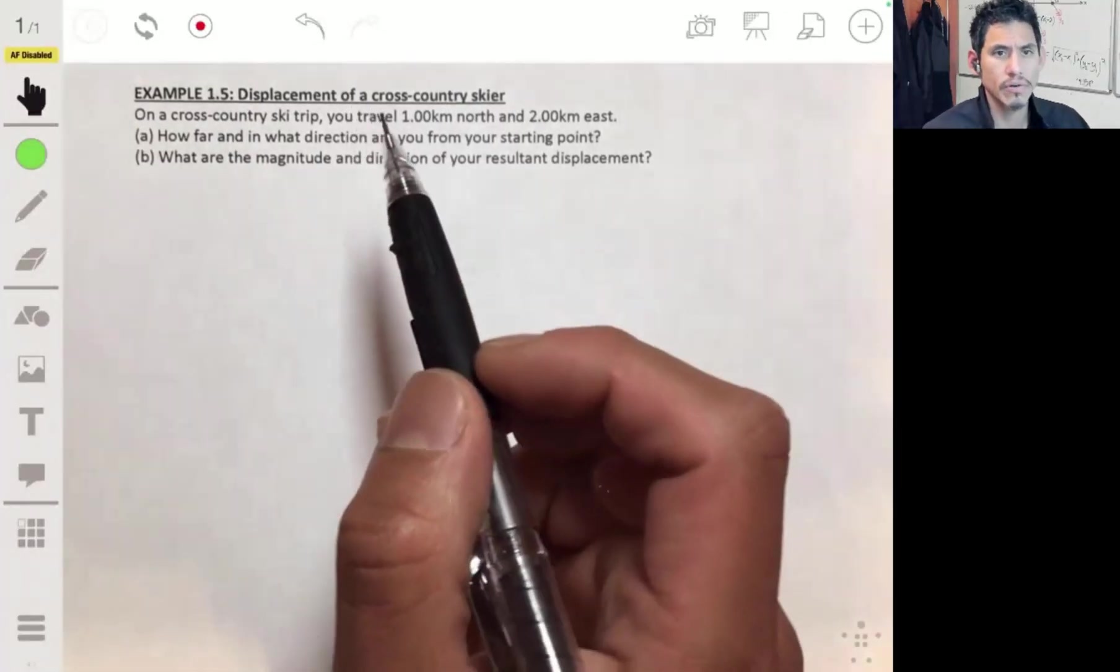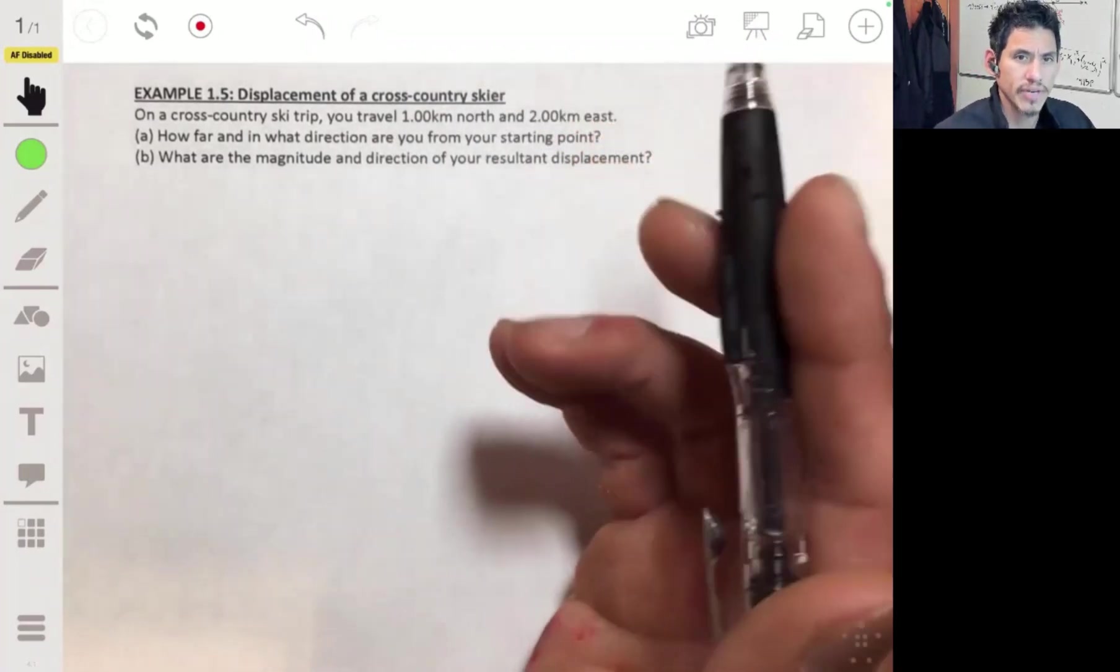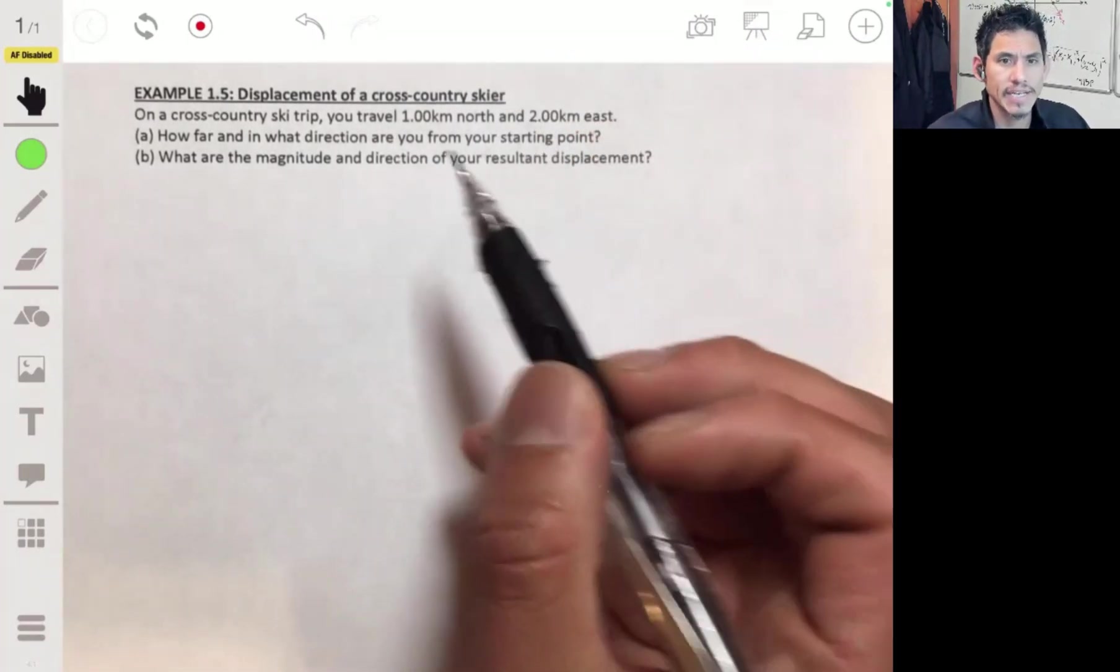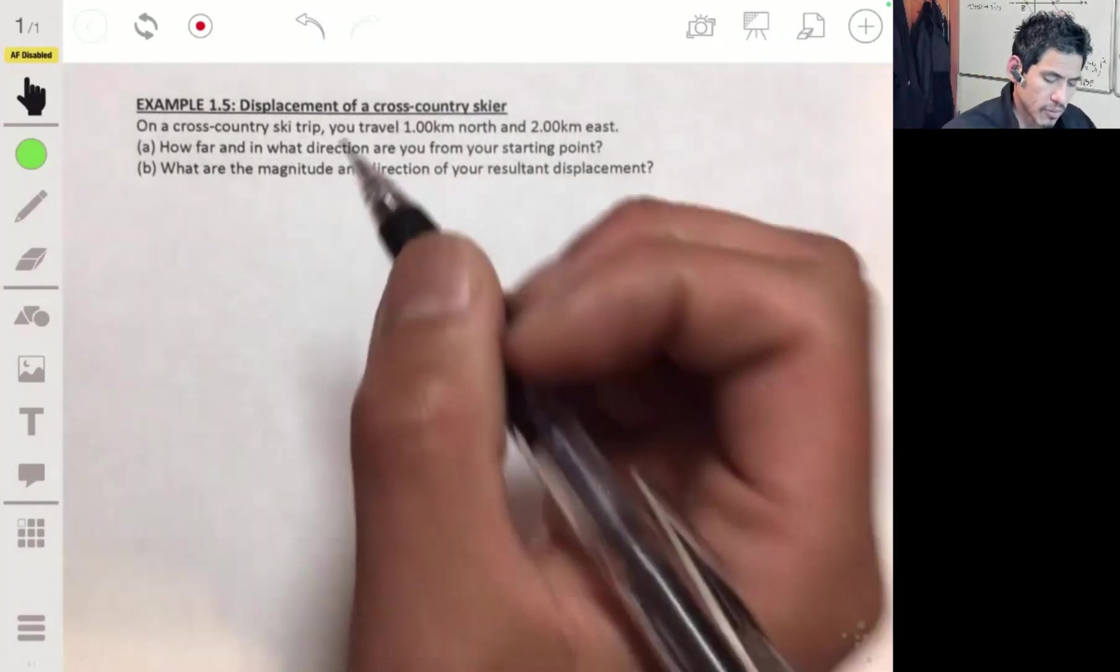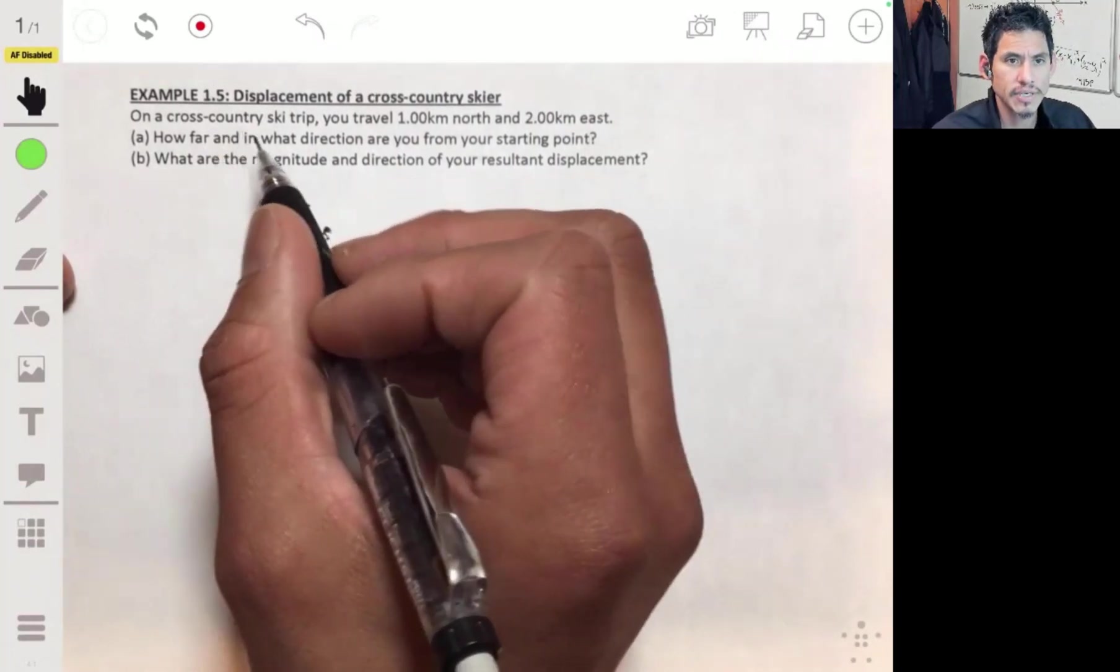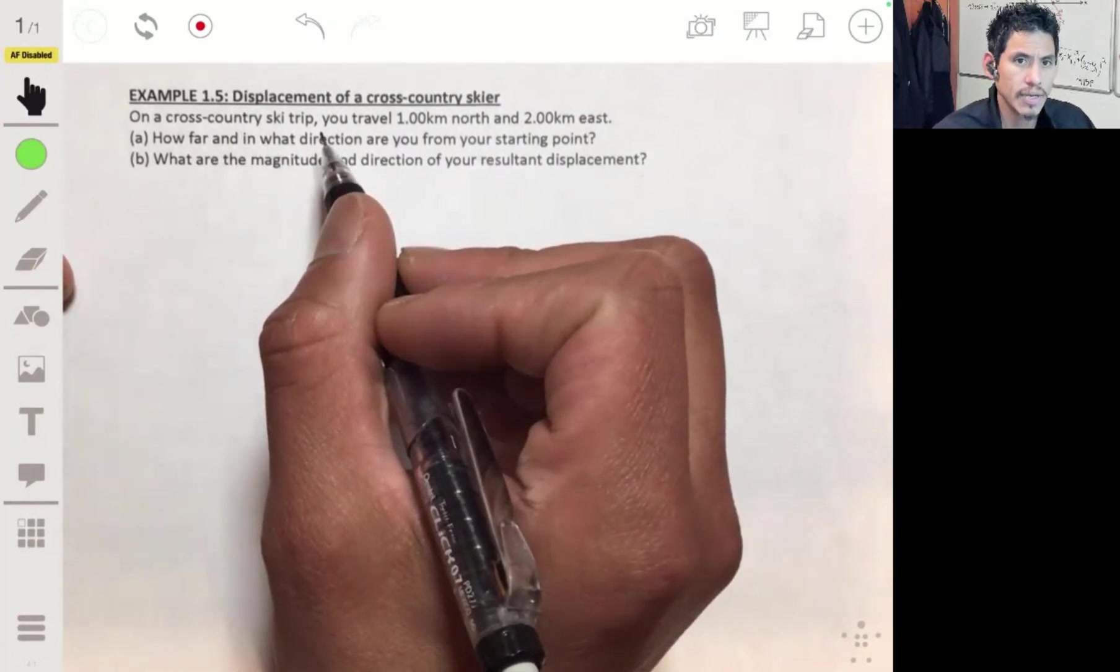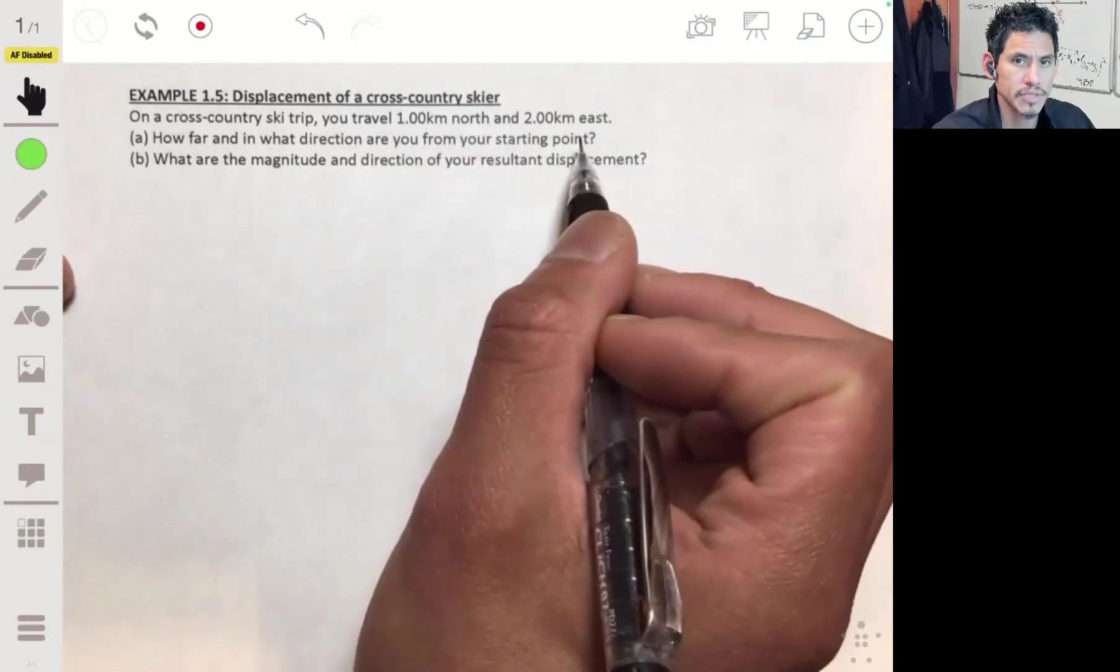All right, so we're going to go over an example that shows how we can find displacement and direction when we're dealing with vectors. In this example, we're on a cross-country ski trip and you're traveling one kilometer north and then two kilometers east.